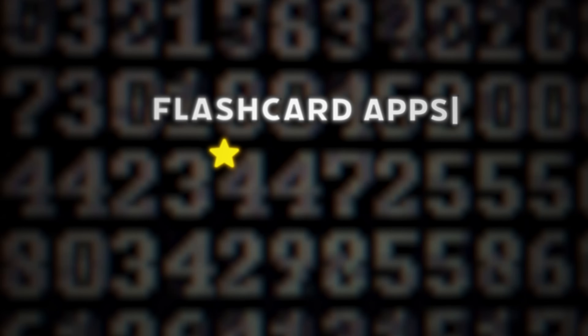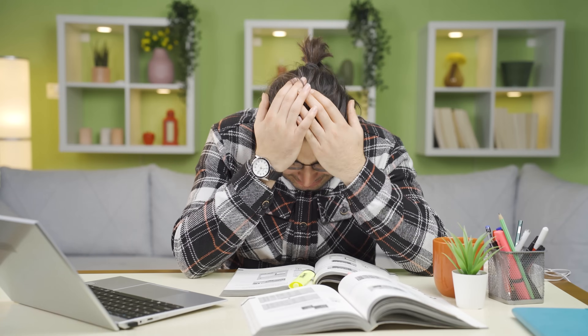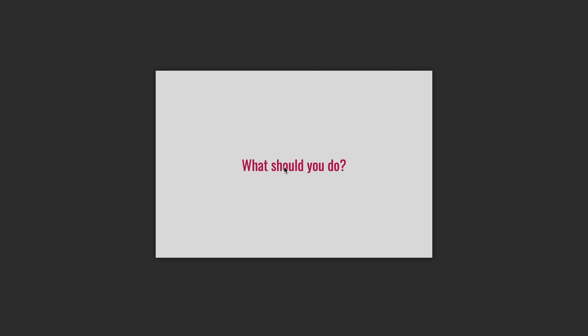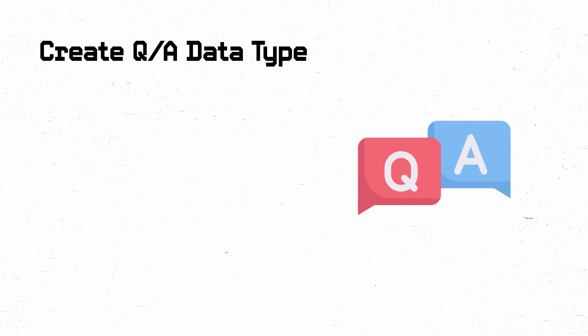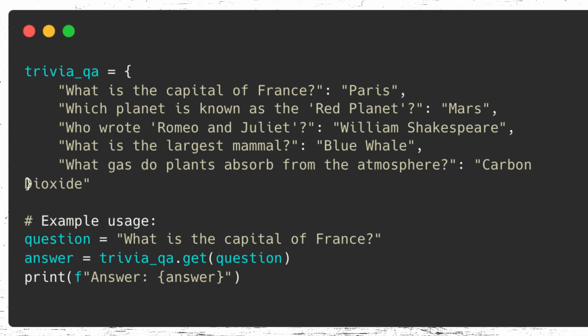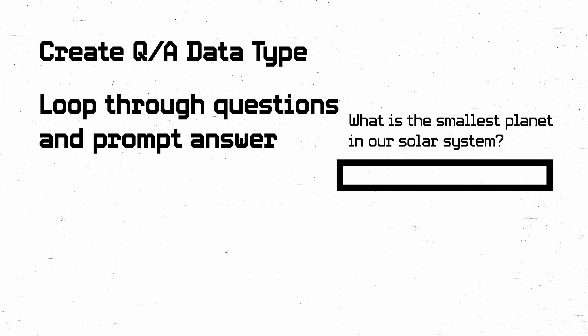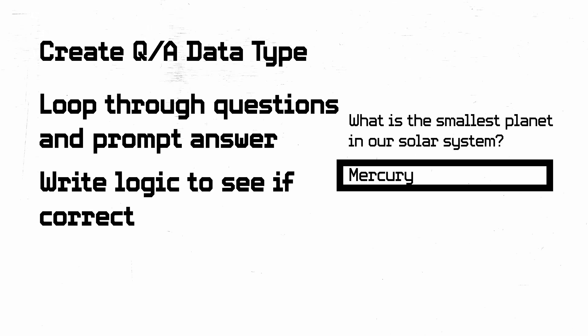Flashcard app. Every student has cried when their dad has done flashcards with them, so cut out the middleman and let's build it ourselves. The premise is easy: have a bunch of cards with questions on them, try and say the answer, and if you give up or want to check, flip the card over and see the answer. Breakdown: create a question and answer data type — a hash map, dictionary, whatever your language calls it. Loop through the keys and prompt the user to answer, then write logic to see if the answer is right or wrong. On the command line it's really easy, but you can also make a user interface on mobile or web.